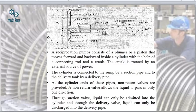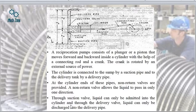At the cylinder ends of these pipes, non-return valves are provided so as not to allow the liquid to return back into the sump. A non-return valve allows liquid to pass only in one direction — unidirectional flow. Through the suction valve, liquid can only be admitted into the cylinder; through the delivery valve, the liquid can only be discharged into the delivery pipe.